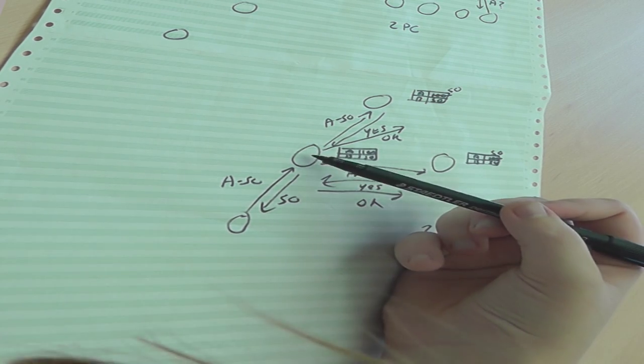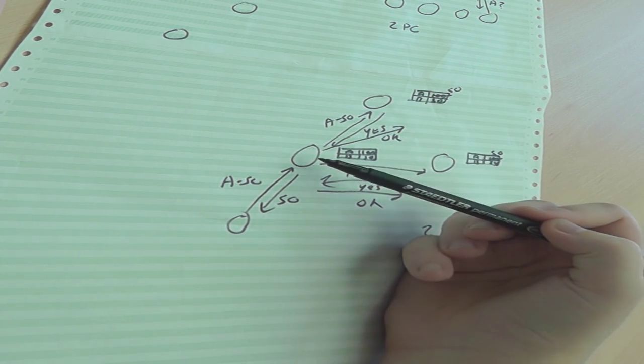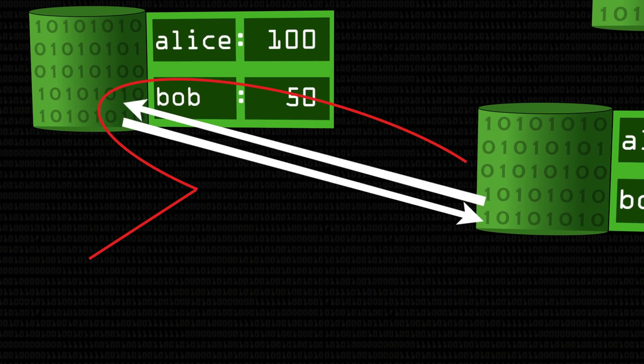It requires each node to ask another node and come back. The time it takes to speak to a node and come back is known as the round-trip time, or RTT. Because it's a two-phase commit — there are two phases — it takes two RTTs to reach consensus in this situation.